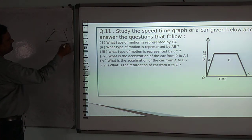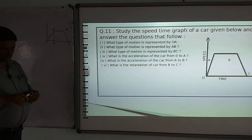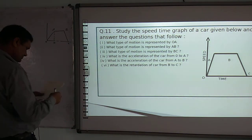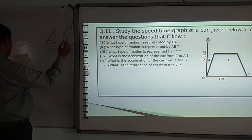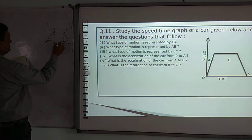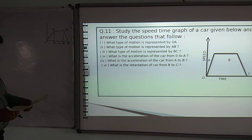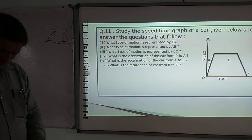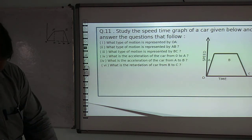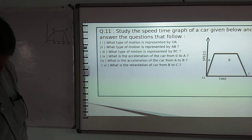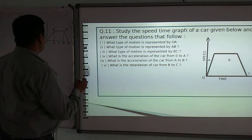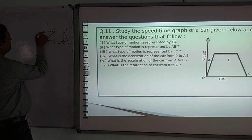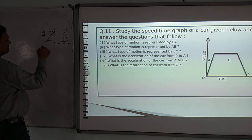The graph has points A, B and C. The time axis goes from 0 to 10 seconds at point A, then 30 seconds, and point C is at 50 seconds. The speed axis shows 40 metres per second as the maximum value.